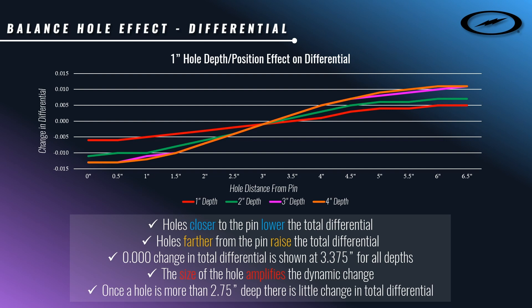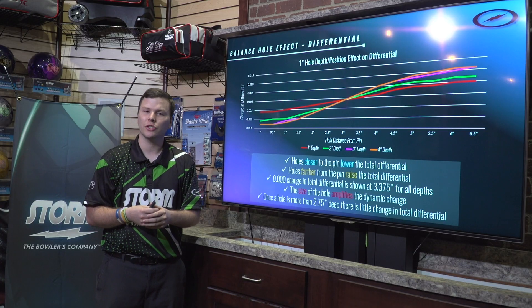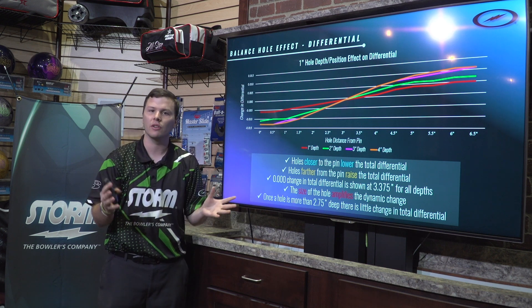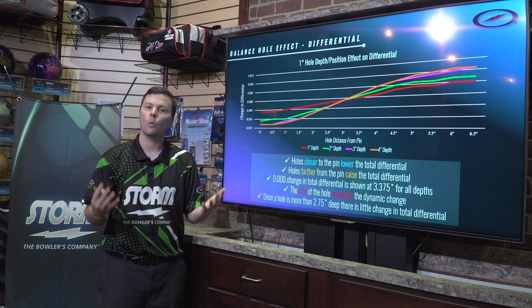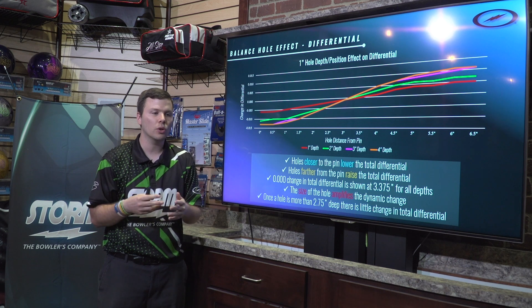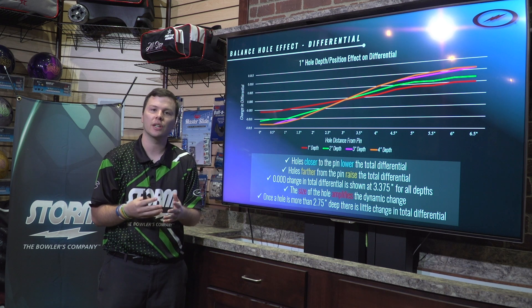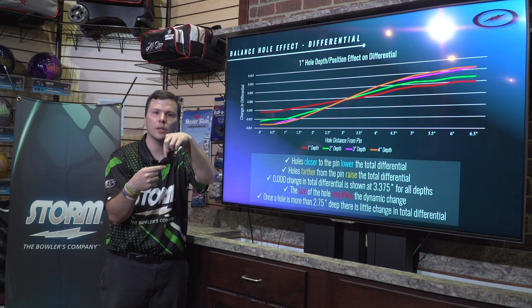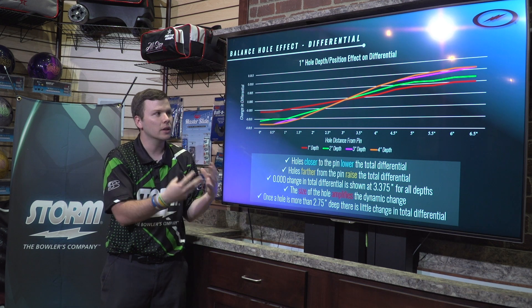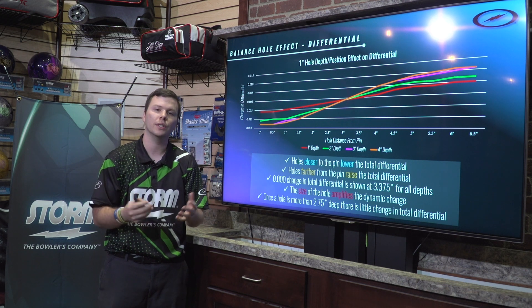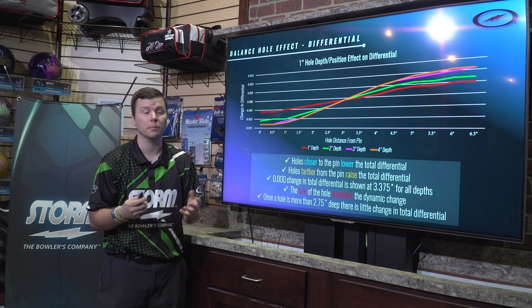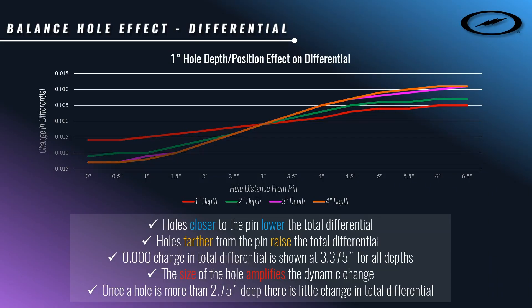One last thing to note: once a hole gets more than two and three-quarter inches deep, there's little additional change in total differential. Those lines actually level out at a certain point. What's happening is the hole is getting so close to the center of the bowling ball that even if you're on the Y-axis at the surface, the X-axis is feeling affected by almost the same amount. So you won't see as big a change once you get past two and three-quarter inches deep.